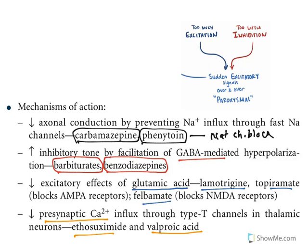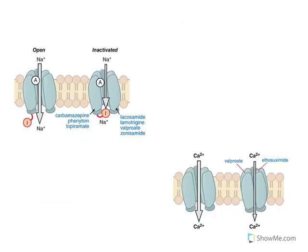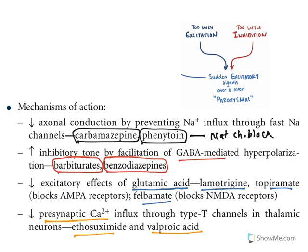Looking at the diagram, sodium channel blockers will be blocking the inside gate — carbamazepine, phenytoin, and topiramate. Some drugs act by multiple mechanisms. Valproic acid can block sodium channels, enhance GABA transmission, and block calcium channels — so multiple actions are present. Sodium channels are blocked by carbamazepine, topiramate, and phenytoin. Calcium channels are blocked by valproate and ethosuximide.